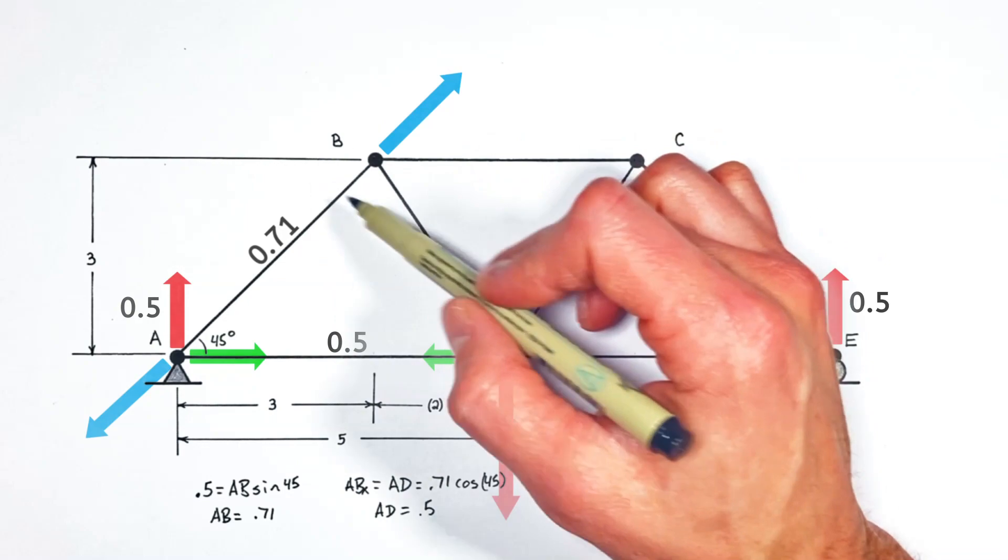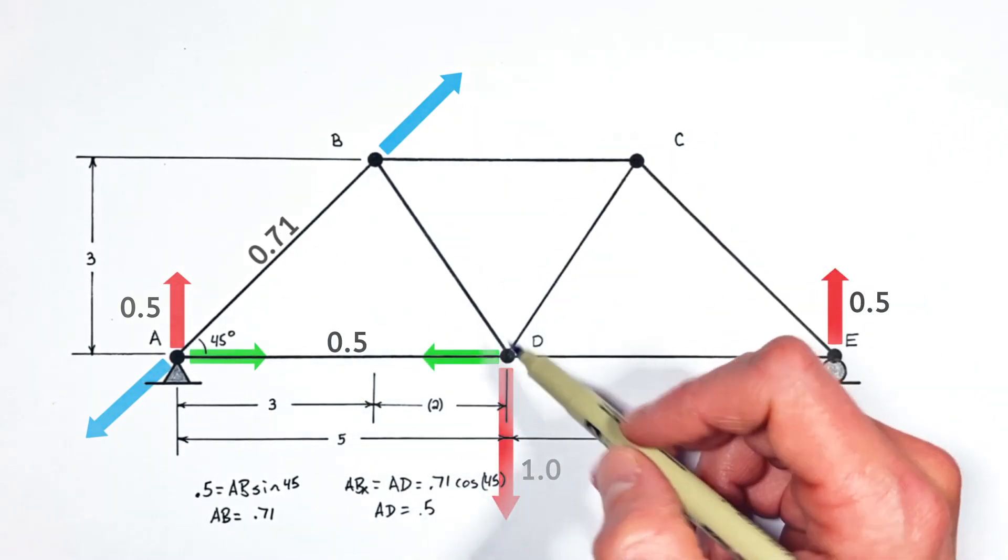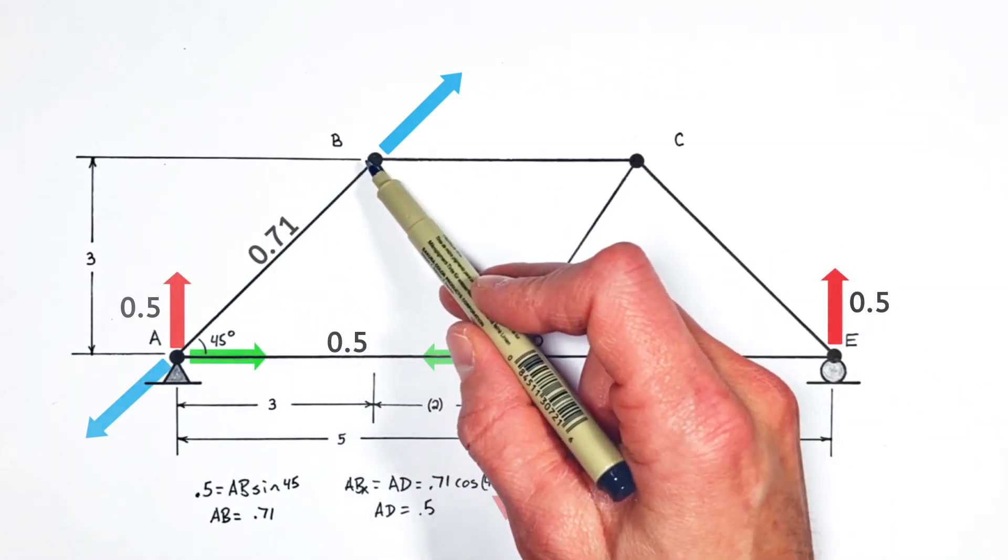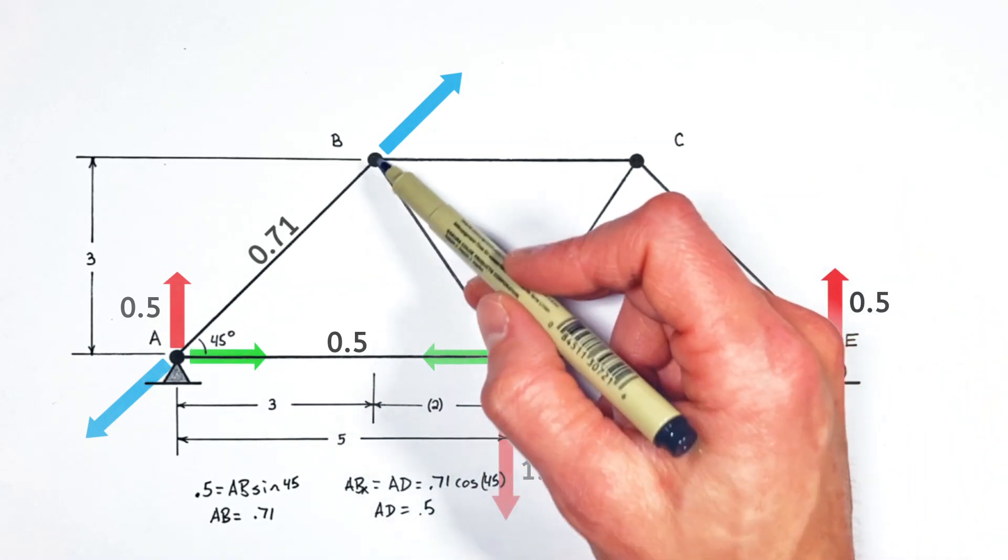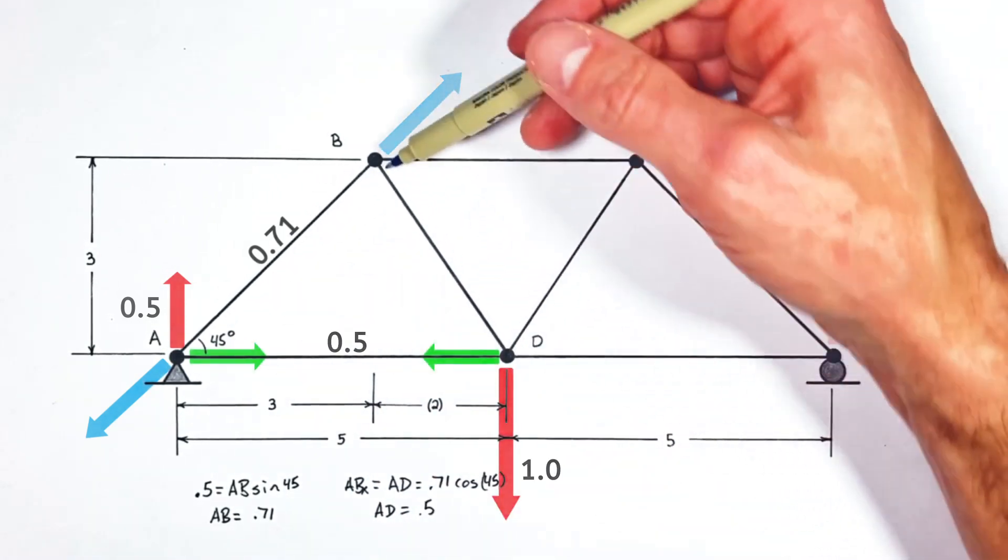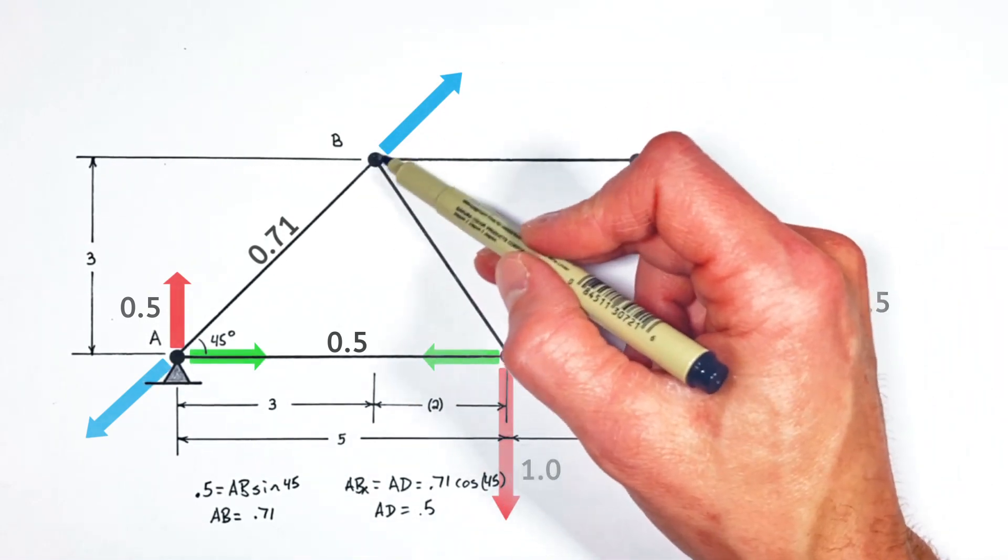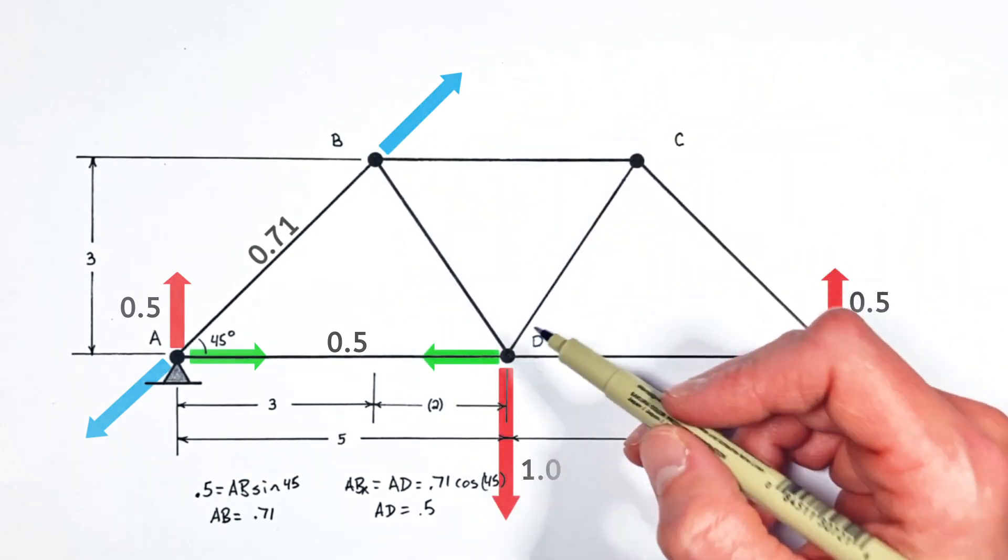Now if you think about this like you're in math class, where each axis is an equation, in the horizontal axis we have one known and two unknown values, but in the vertical axis we have one known and only one unknown. So what we're going to do is look at joint B right here in the vertical axis to solve for beam BD.